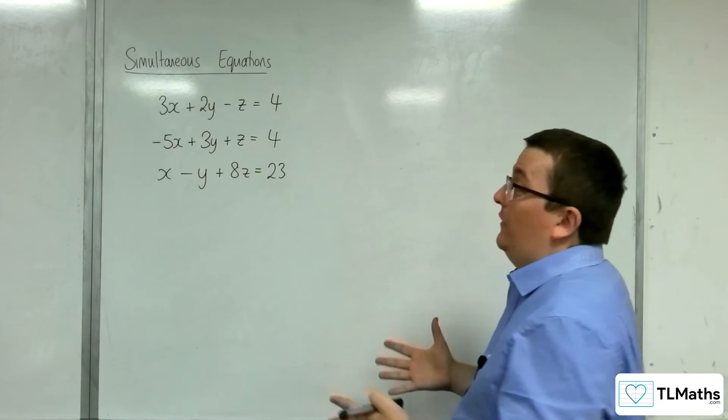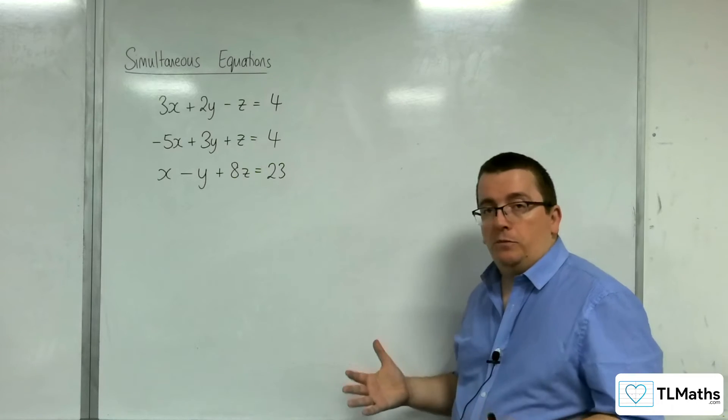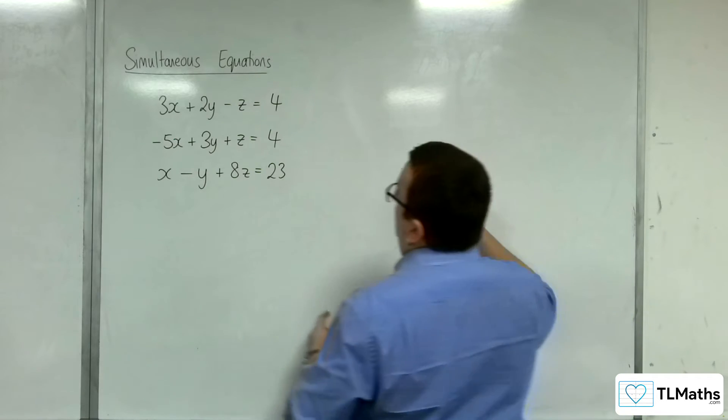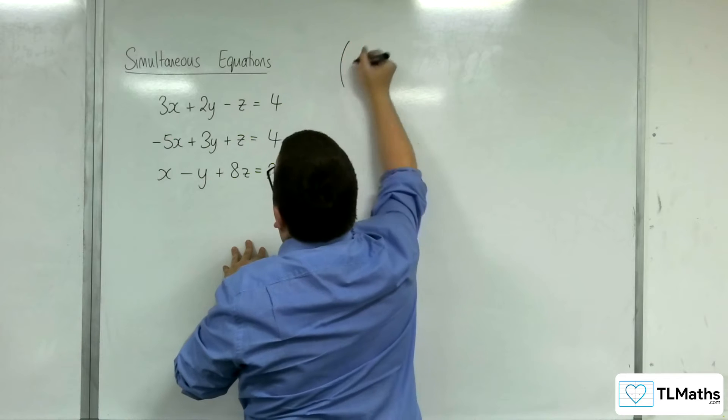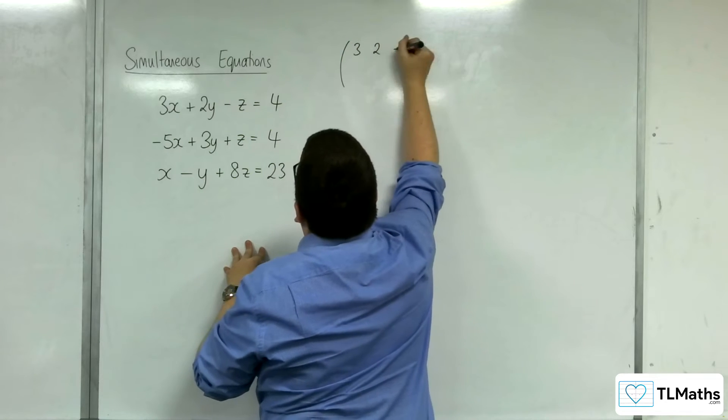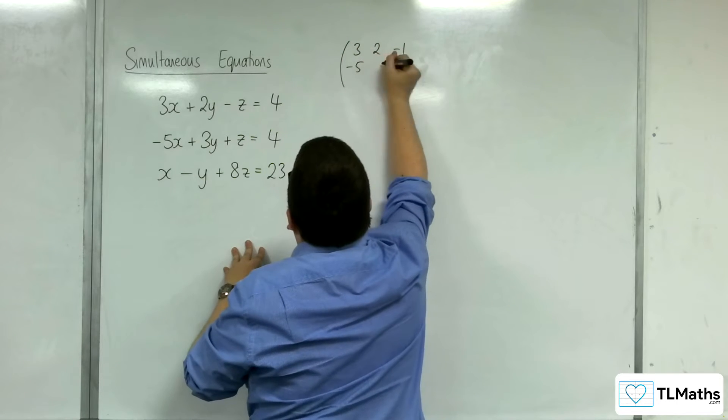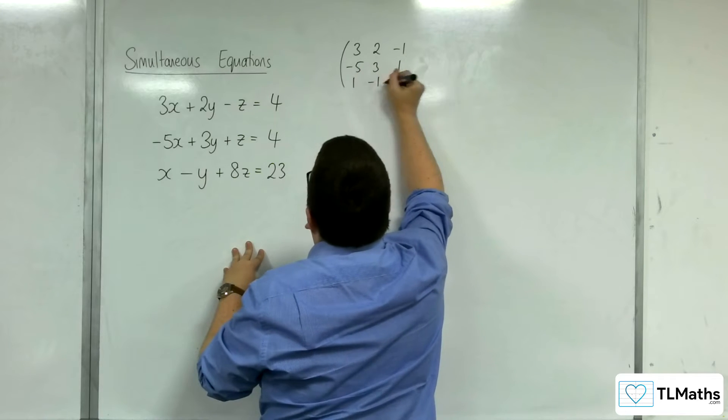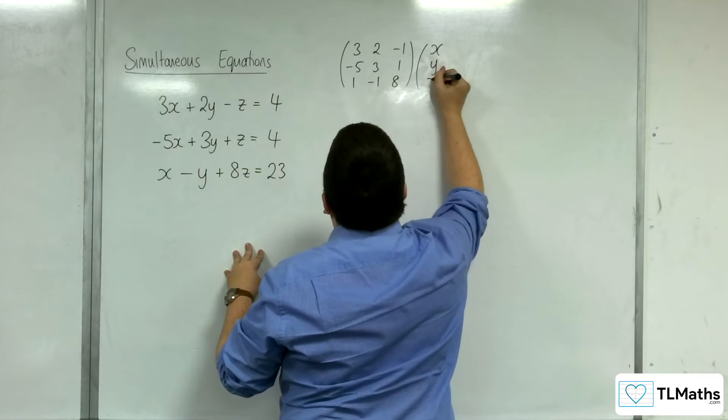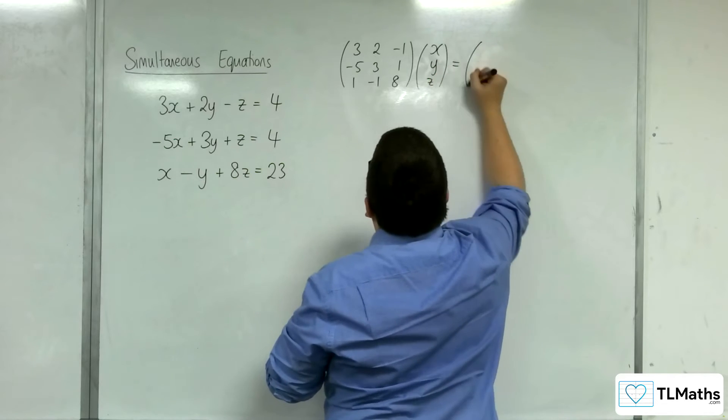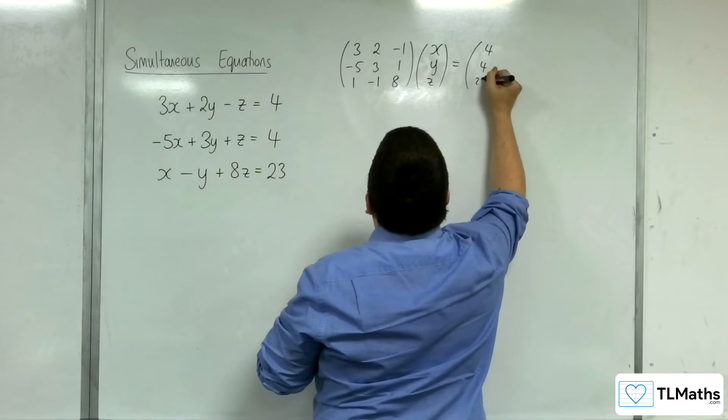So, we're going to use exactly the same method that we used for the 2x2. So, we know that we've got this matrix of coefficients: 3, 2, negative 1, minus 5, 3, 1, 1, minus 1, 8. And that's been multiplied by x, y, z to get me 4, 4, 23.